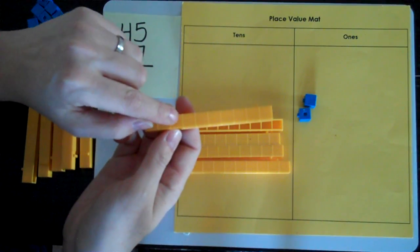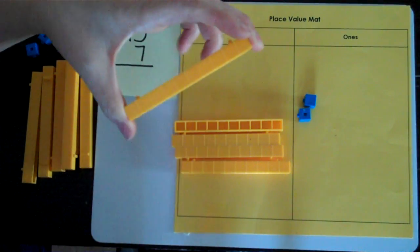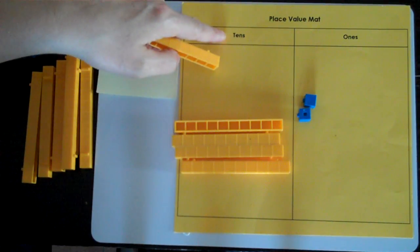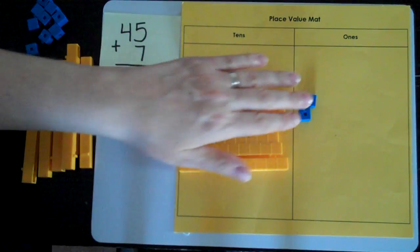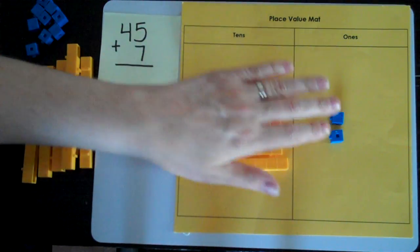One, two, three, four, five, six, seven, eight, nine, ten. One's all together. Because it's now a ten rod, I'm going to put it in the tens place. So now I've put all my ones together and I've counted them. I have two.